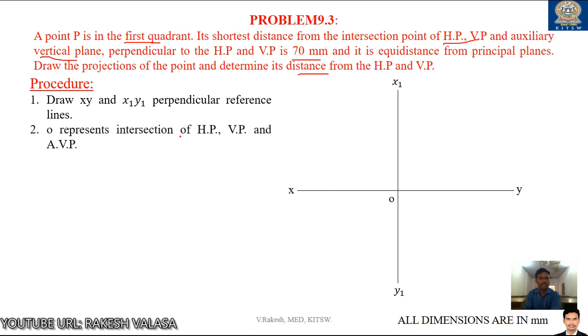O represents intersection of horizontal plane. That means, this one horizontal plane, vertical plane and auxiliary vertical plane. This is the intersection. This is the horizontal plane. This is the vertical plane. This auxiliary vertical plane means perpendicular to both HP and VP. This is the intersection of horizontal plane.